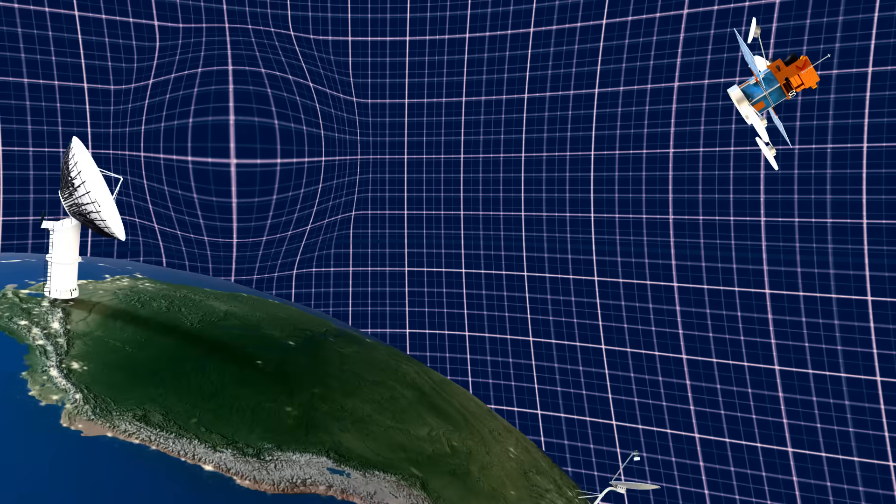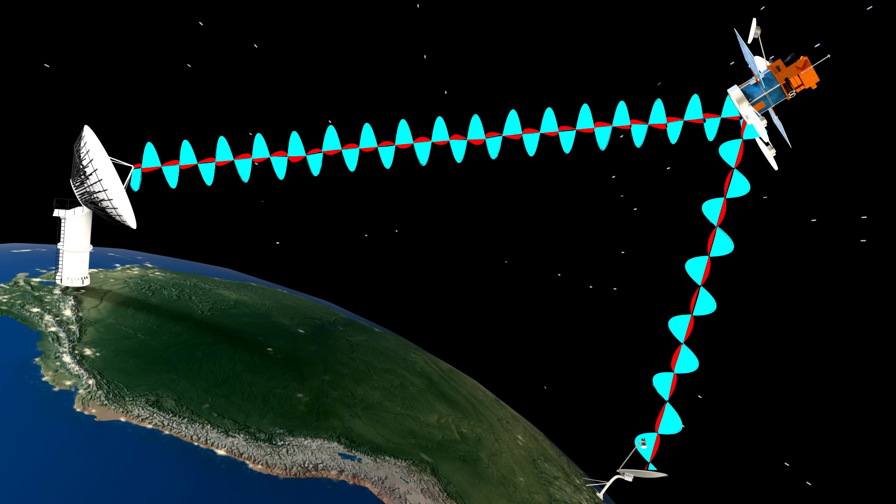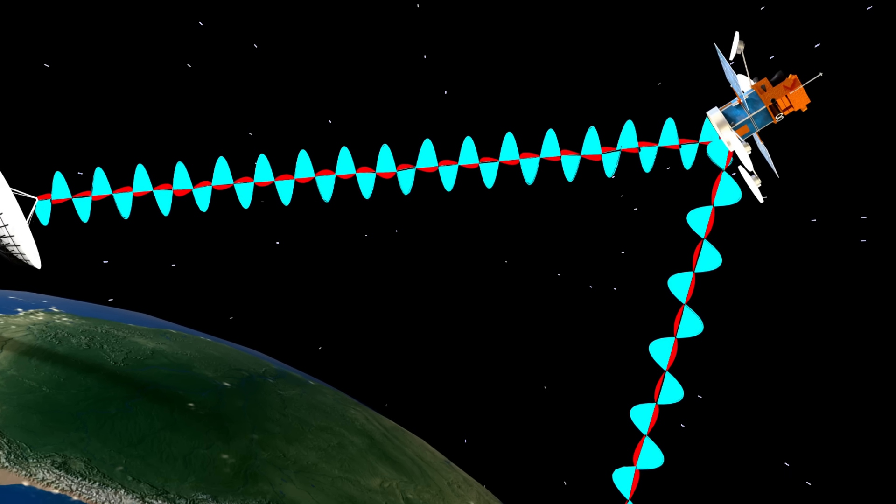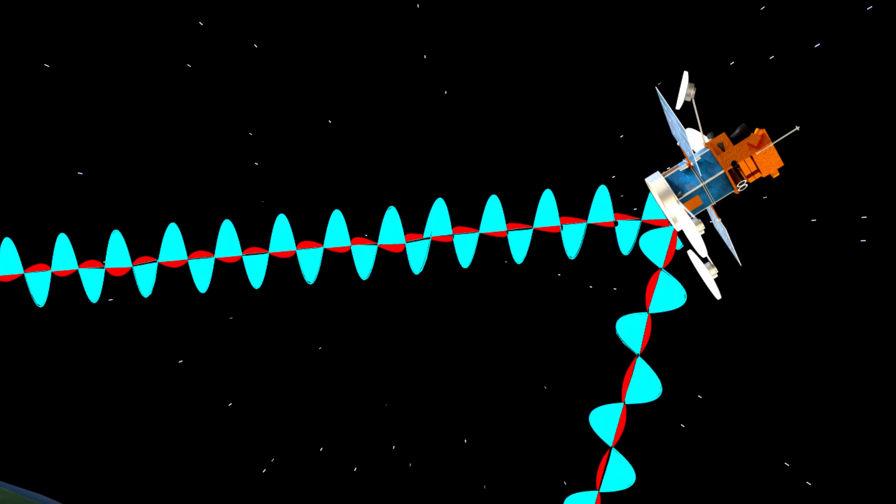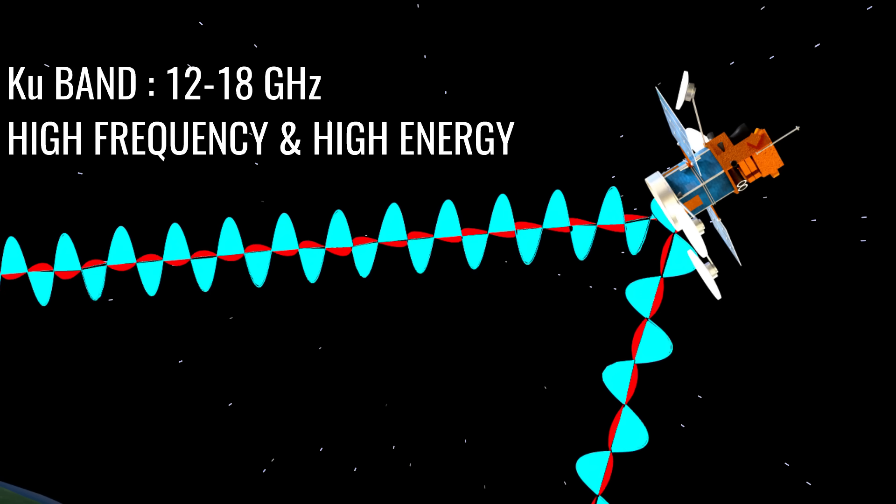The uplink frequency is always higher than the downlink frequency. You can see antennas of different frequency bands. For D2H, the KU band frequency is generally used.